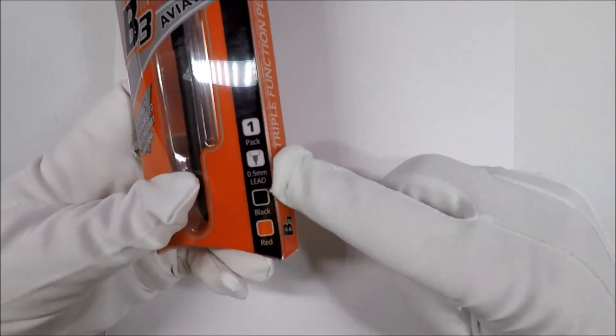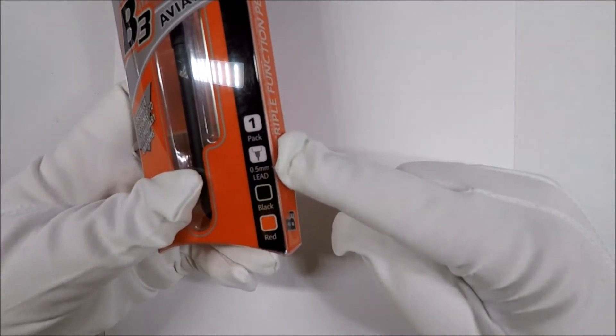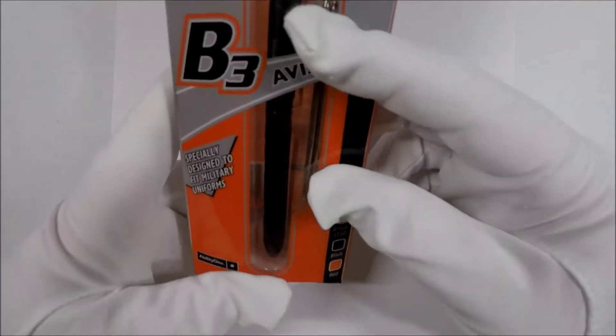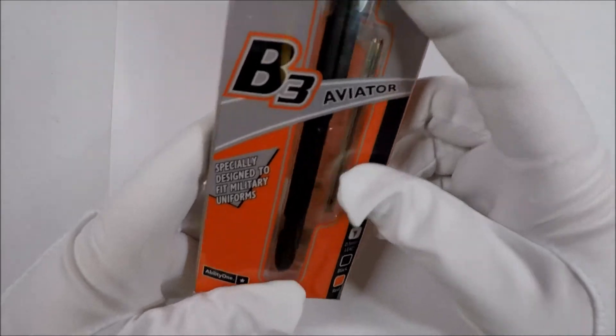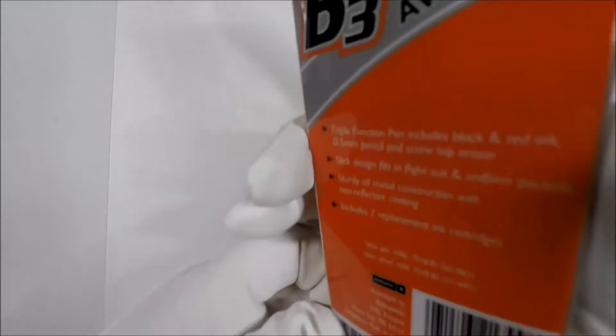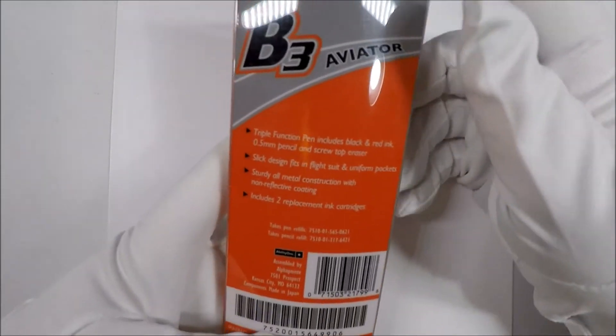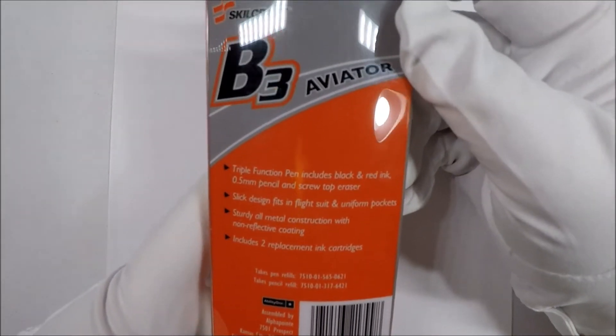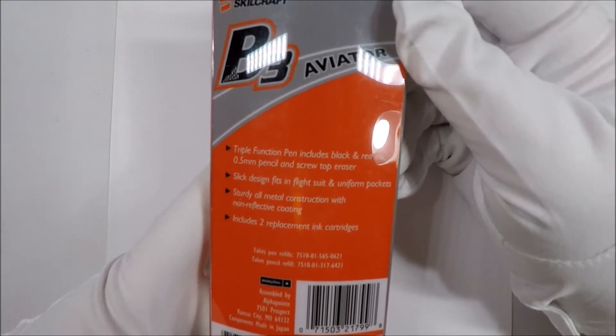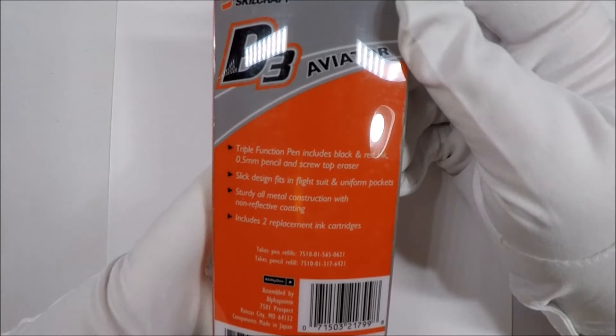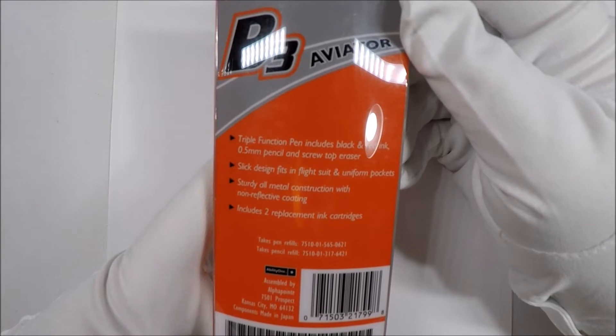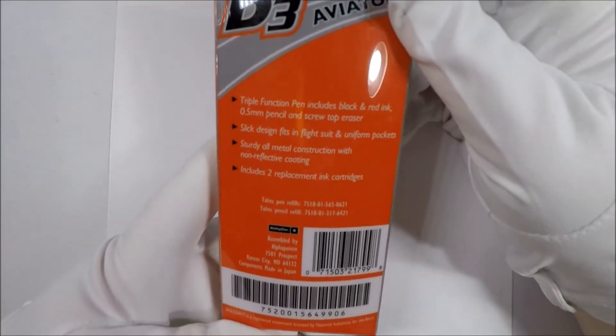Okay so it has a 0.5 millimeter mechanical pencil and it has red and black ink, especially designed to fit military uniforms. Alright so let's see what it says in the back. Triple function, slick design fits in flight suit and uniform pockets. Sturdy all metal construction with non-reflective coating includes two replacement ink cartridges.